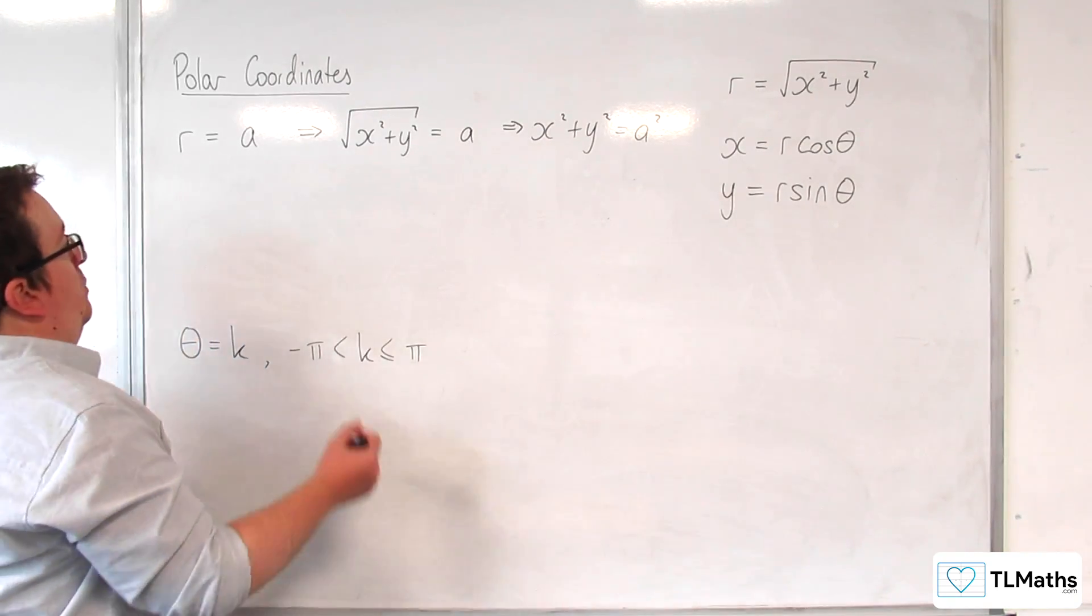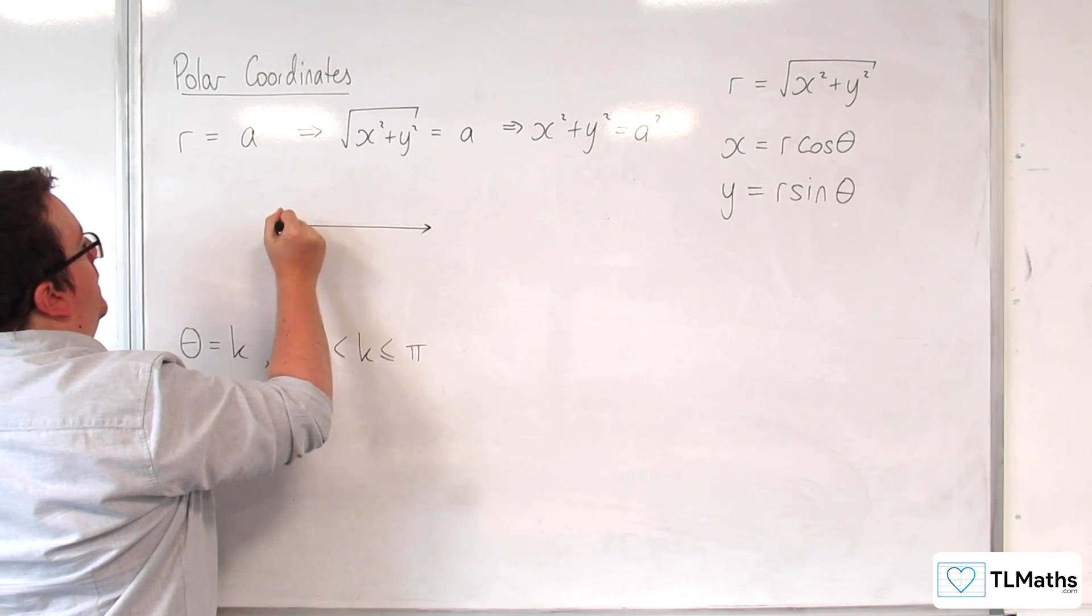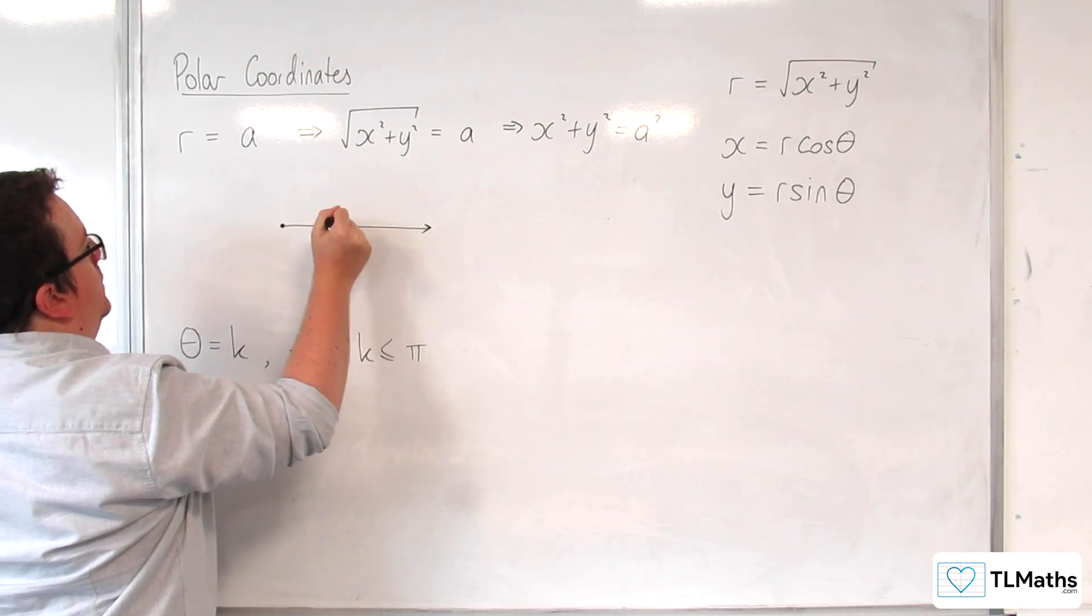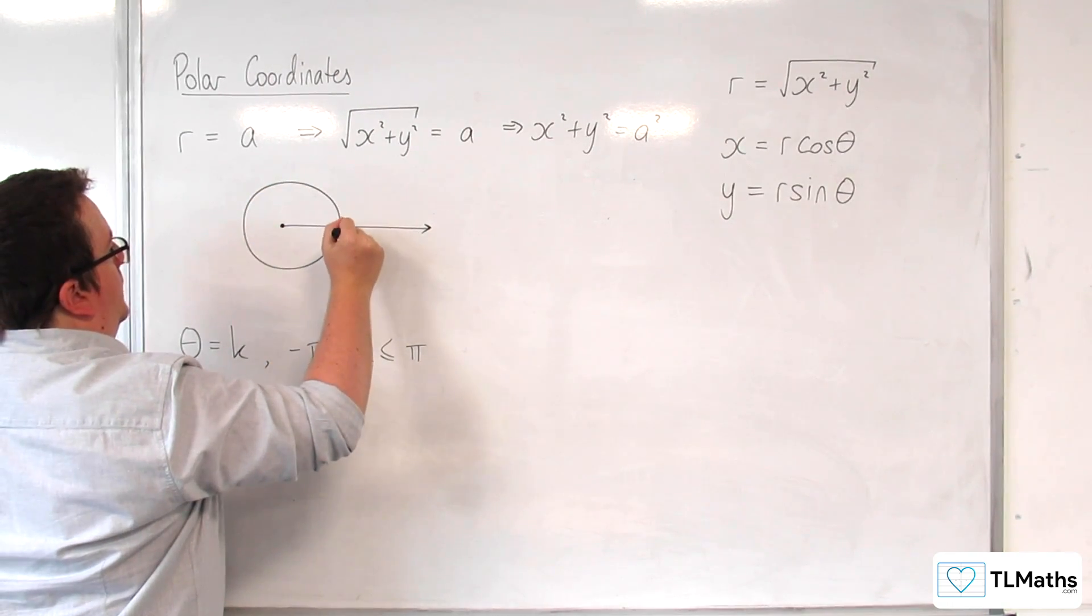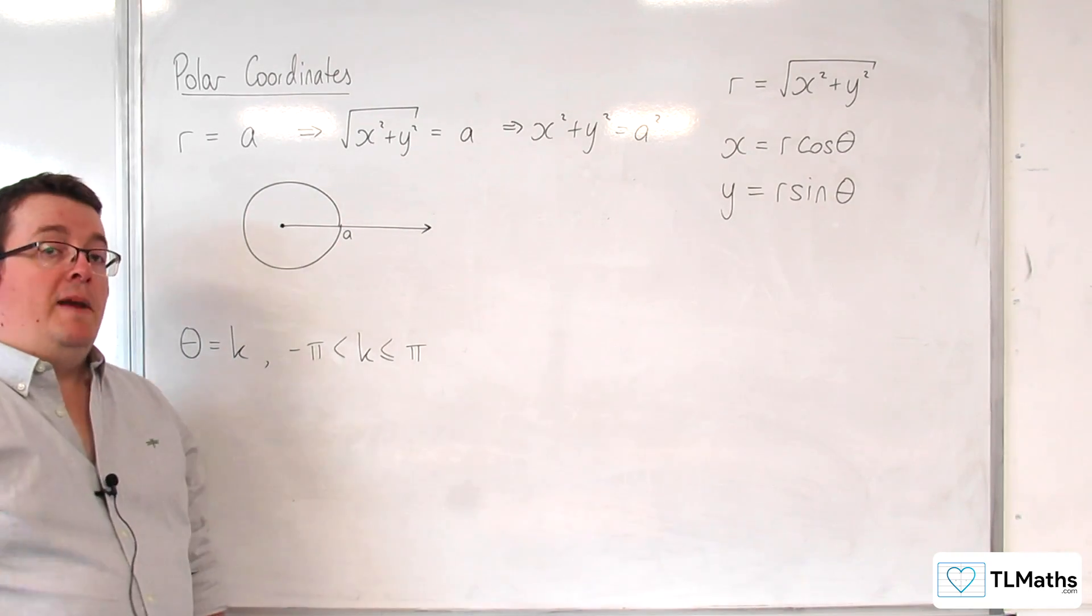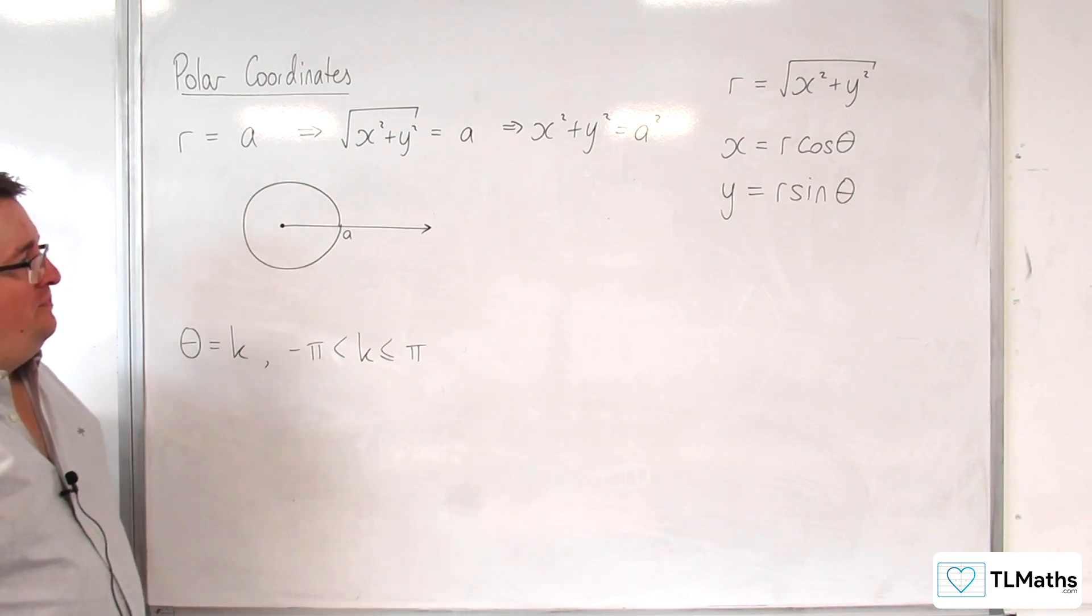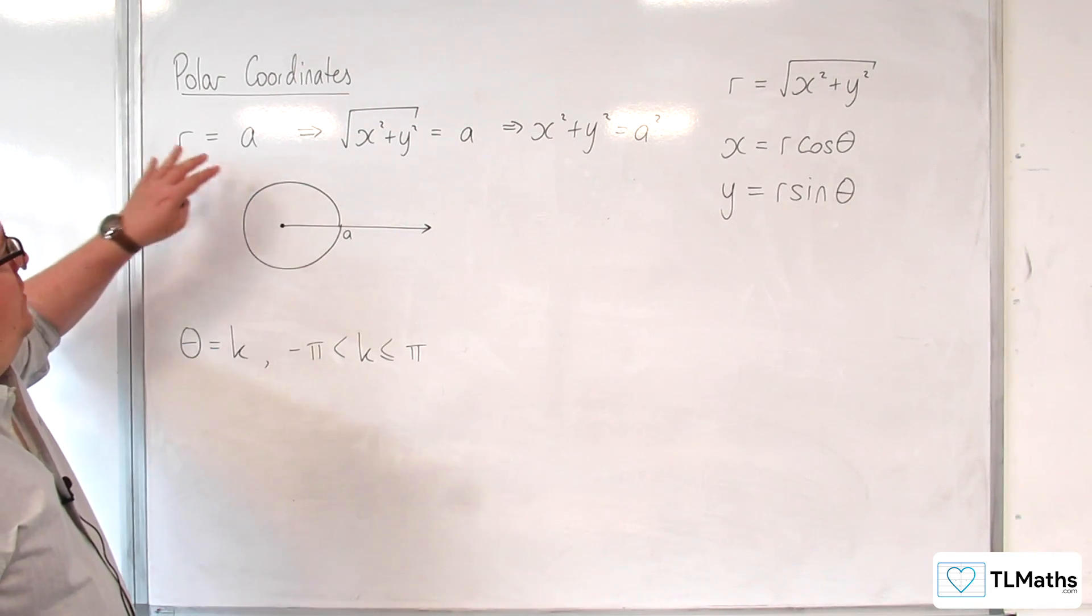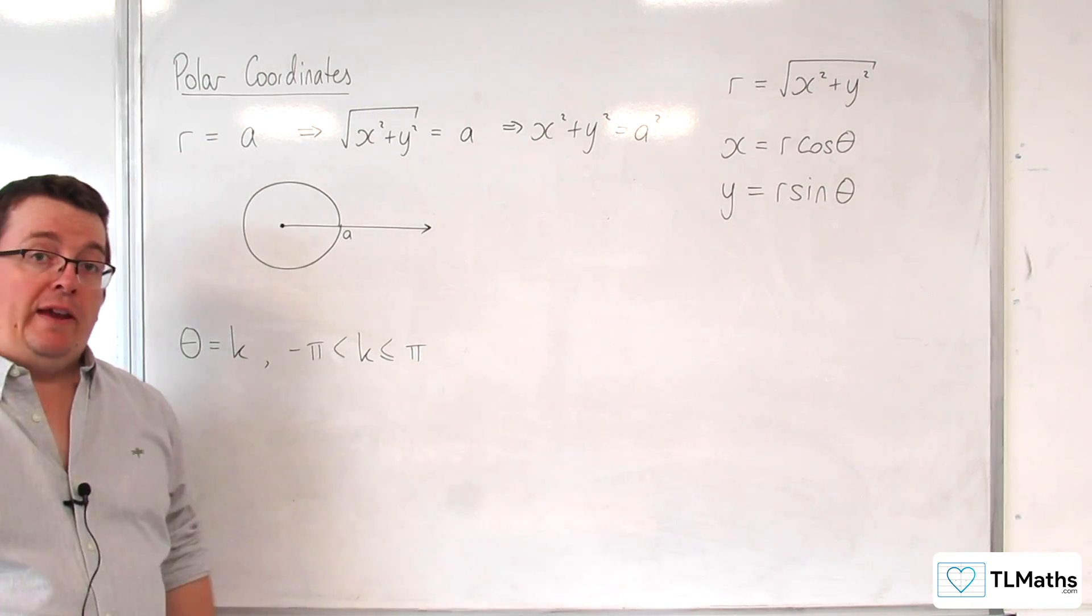So actually what we get - here's our initial line, here's our pole, that's of radius a. It was meant to be a circle, so that'll have to do. That is a circle centered at the origin, or centered at the pole with radius a.